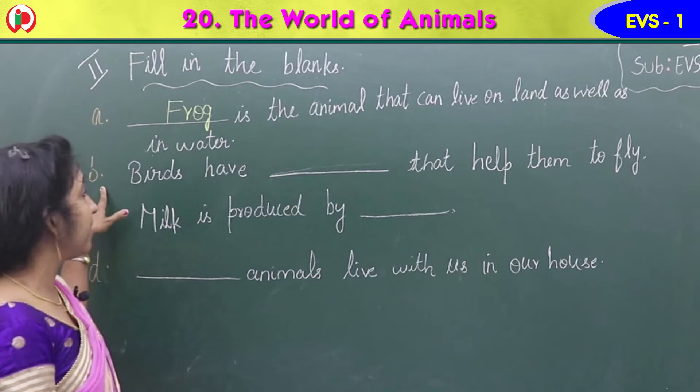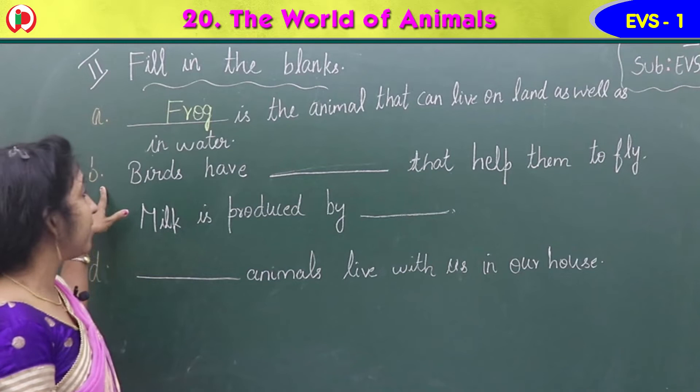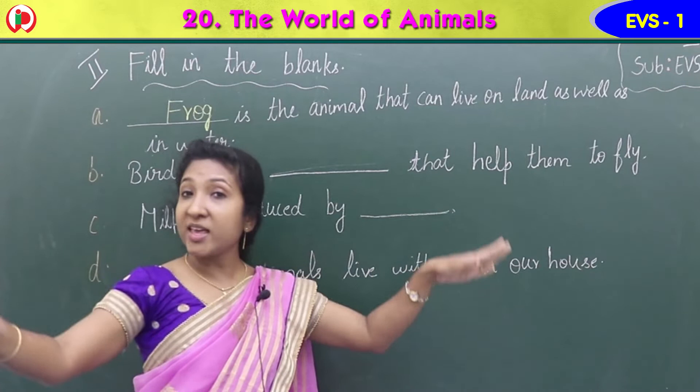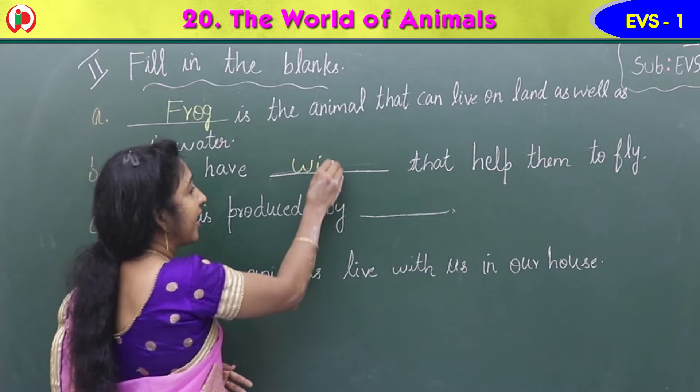B, the second one: birds have dash that help them to fly. Birds have wings or feathers — we can say wings. Birds have wings to fly. W-I-N-G-S. Wings.